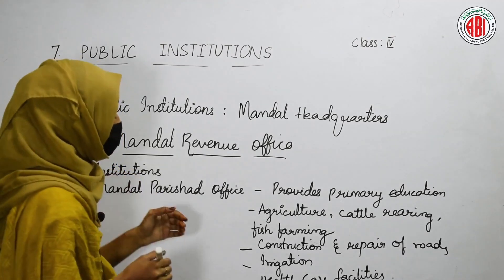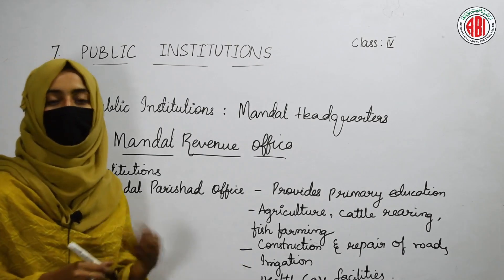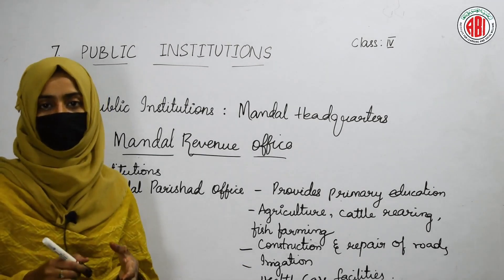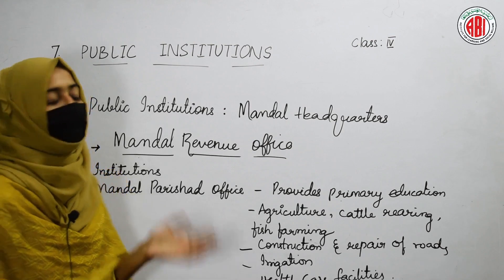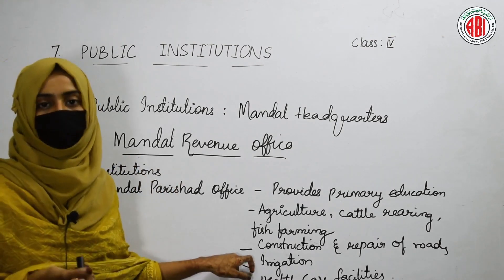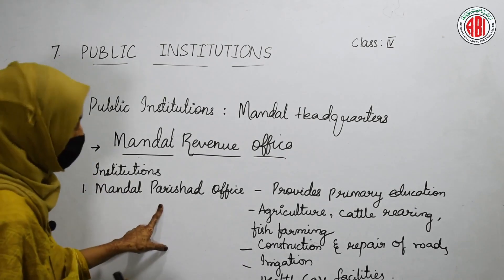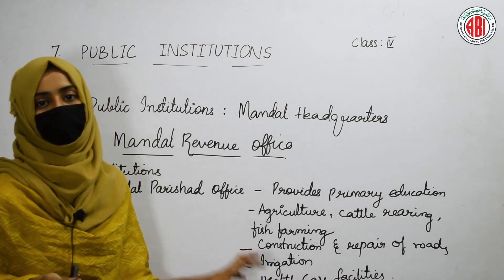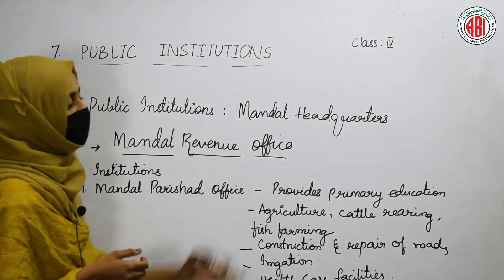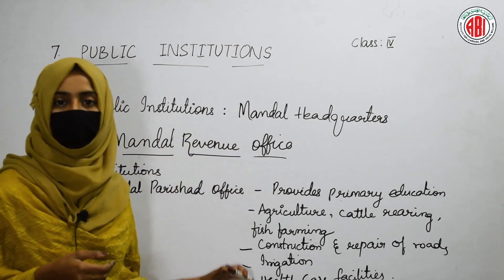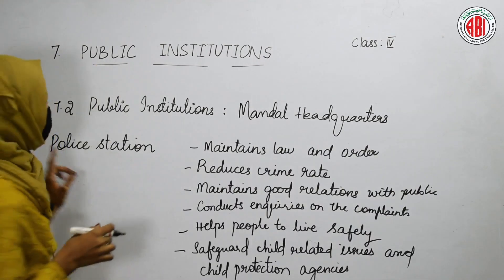The Mandal Parishad Office also constructs and repairs infrastructure and helps in the process of irrigation — supplying water to agricultural fields so that crops can be grown. The office also looks into healthcare facilities and provides healthcare to the public. All these functions and facilities are provided to the public by the Mandal Parishad Office.